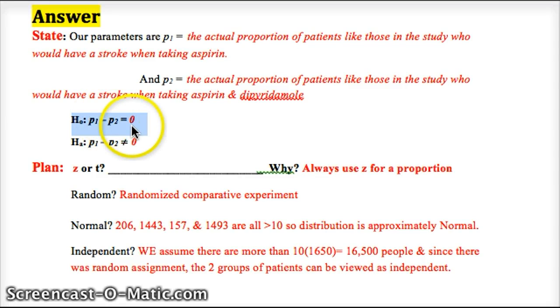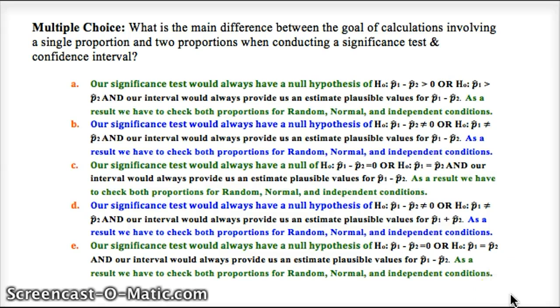When we do a confidence interval for this, instead of having a confidence interval for one proportion, it's going to be the confidence interval for the difference. The range of values that we're confident that the difference is between. So we'd be estimating P1 minus P2. Go ahead and pause your video now and answer the multiple choice here about the main difference between the goal of calculations involving a single proportion and two proportions. Here are your five answer choices. This goes into what I directly just talked about. If you're ever having trouble answering these, think about what your null hypothesis should always be, think about what a confidence interval would be estimating, and use those ideas to answer the multiple choice.